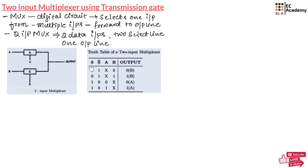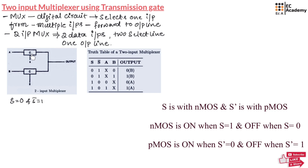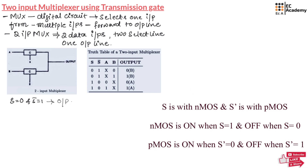Let us take a look at the truth table of two input multiplexer. This truth table shows the relationship between the select lines S and S bar and the inputs A and B, and also the output. If S is equal to 0 and S bar is equal to 1, this switch will be open and this switch will be closed. So output will be equal to B regardless of A value. That is why in this truth table, A is marked as don't care. If B is equal to 0, output will be equal to 0, and if B is equal to 1, output will be equal to 1. So the output will be equal to B.